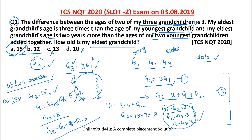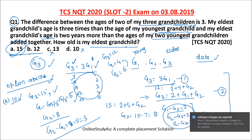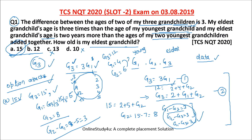Let us also verify option B: G3 = 12, then G1 = 4, and G2 = 6. The differences are 12−6=6, 6−4=2, 12−4=8 — none equals 3. So option A, with the answer 15, is the correct answer.